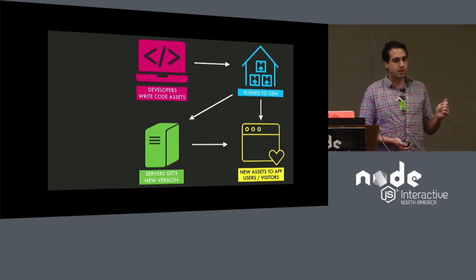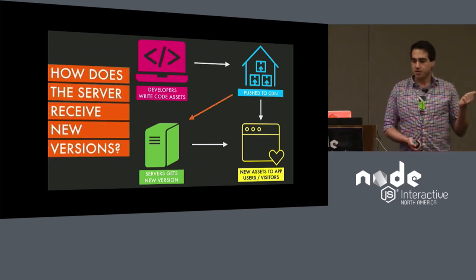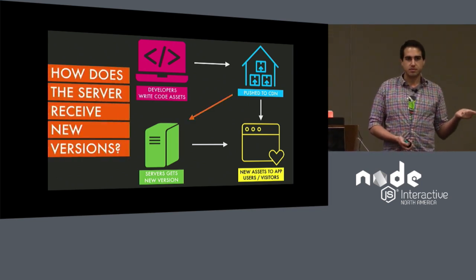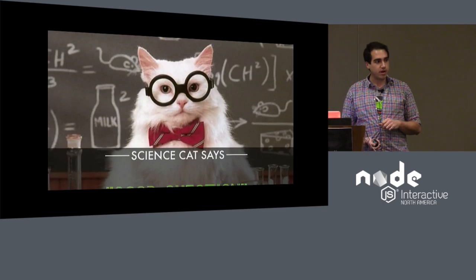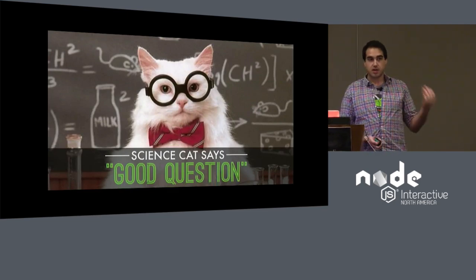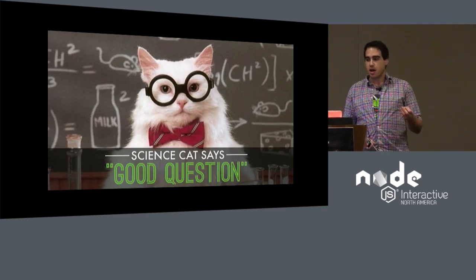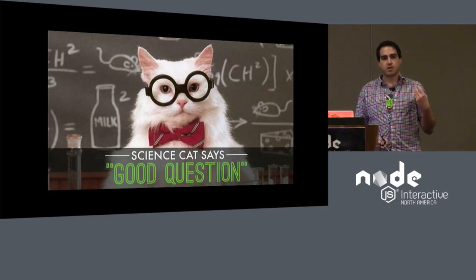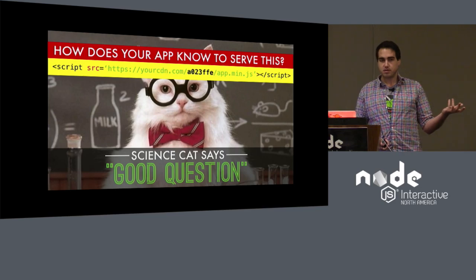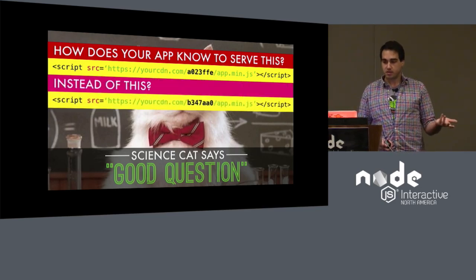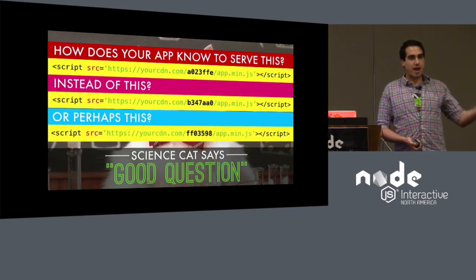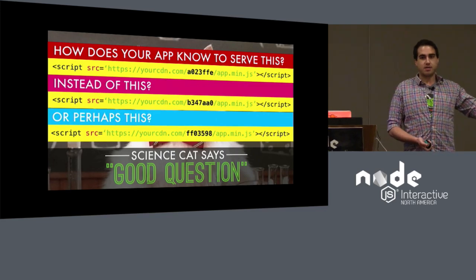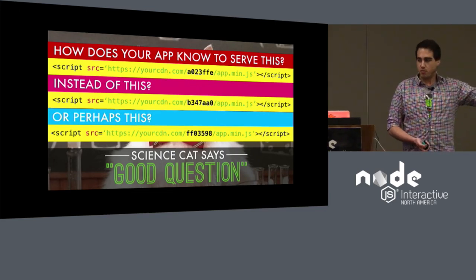But the real question is: how does the server receive new versions? To put it another way, how does your server know to serve this version instead of this one, or perhaps this one? What actual asset is my front-end code?